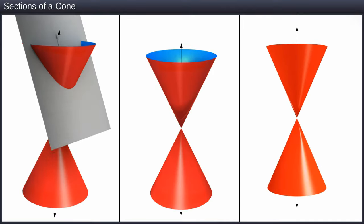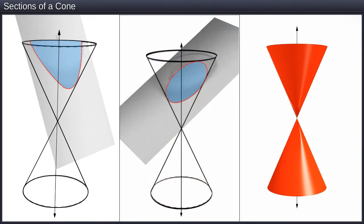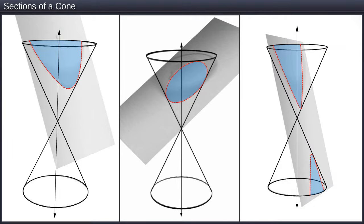We get different kinds of conic sections of different shapes depending on the position of the intersecting plane with respect to the cone and the angle it makes with the vertical axis of the cone.